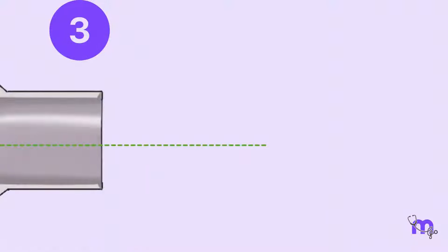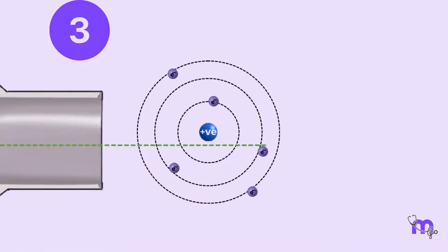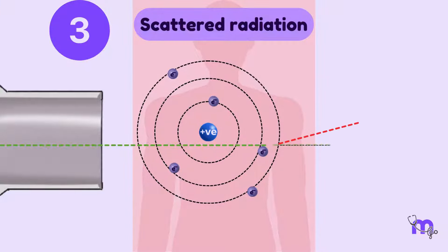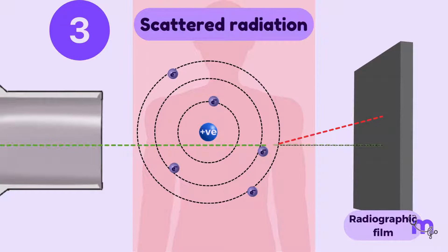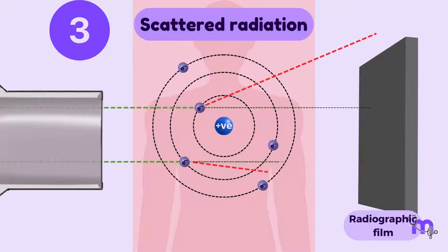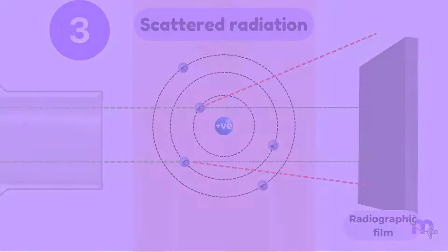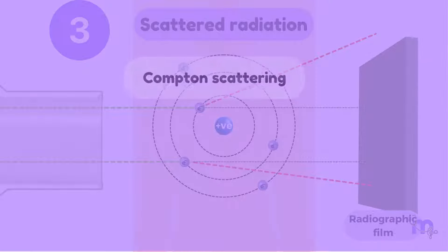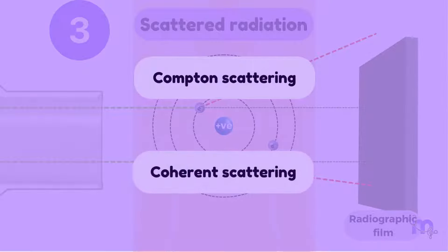Thirdly, some primary photons first interact with the atom of the patient tissue, then create scattered radiation by deflecting from their original path. This radiation either reaches the film or travels away from it. This could happen in two ways, called Compton scattering and Coherent scattering.